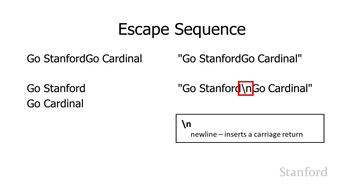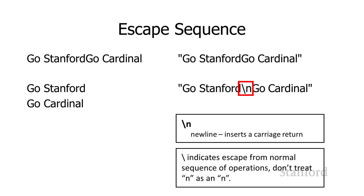As we talked about in the very first lecture of the quarter, there are different ways computers represent the end of a line — it's different depending on whether we're working with Unix machines, Windows machines, or very old Macs. The Python interpreter actually knows the proper representation for your specific computer, and it will translate that \n to the exact sequence of ASCII or Unicode characters necessary. This is called an escape sequence, because that backslash indicates to Python that the next character is not to be treated normally.